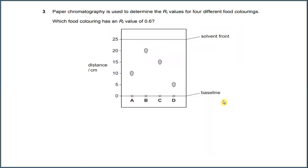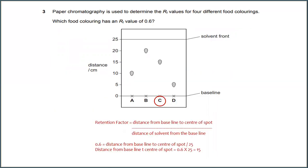Number 3. Paper chromatography is used to determine the Rf value for 4 different food colorings. Which food coloring has an Rf value of 0.6? The retention factor is the distance from baseline to center of spot divided by distance of solvent from the baseline. Since the Rf value is 0.6 and the solvent distance is 25, the distance from baseline to center of spot is 0.6 × 25 = 15. So the answer for this is C, which is 15.